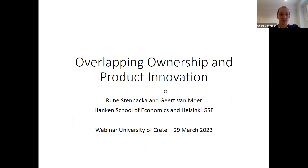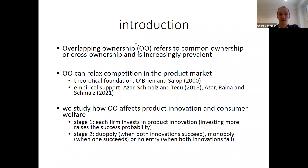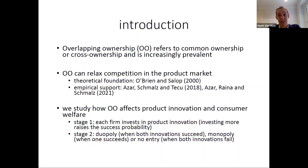Overlapping ownership is an umbrella term referring to two types of ownership structures. The first is common ownership, which happens when a common owner — for example a financial institution like BlackRock — holds stakes in several firms that are also competitors against each other in the product market, such as several airline companies.